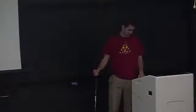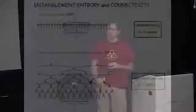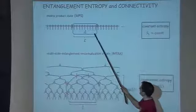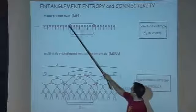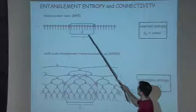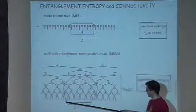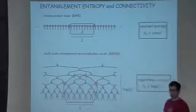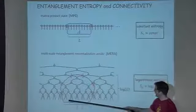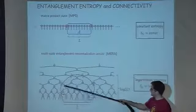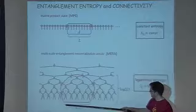That was all about being able to define a distance in the geometry given by the tensor network. Entanglement entropy had to do with connectivity - how hard it is to break our tensor network so that region A is separated from the rest. In the MPS, that could be done by breaking two bonds regardless of the size of A, giving a constant upper bound to the entropy. Whereas in the MERA, the larger the region, the more bonds you had to break, and that number was log L.